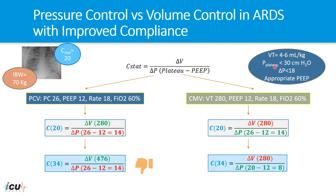So that means, according to the protective lung strategy, in the pressure control case the patient will end up having a higher tidal volume than what is recommended. In the volume control case, the tidal volume within the protective lung strategy will be delivered with even lower pressure, adhering to the protective lung strategy. But in pressure control ventilation, the patient will receive a higher tidal volume than recommended.